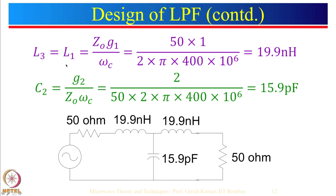So L1 is equal to L3. Here R0 is equal to Z0 which is given as 50, and G1 is equal to G3 equal to 1. Omega c is 2 pi times fc, which is 2 pi times 400 MHz. Simplifying, that comes out to be 19.9 nanohenry. For capacitance, using the G parameter G2 which was equal to 2, with Z0 equal to 50 and omega c equal to 2 pi times 400 MHz, that comes out to be 15.9 picofarad. This is the actual circuit which will meet the requirement of the 400 MHz cutoff frequency and at least 20 dB attenuation at 1 GHz.